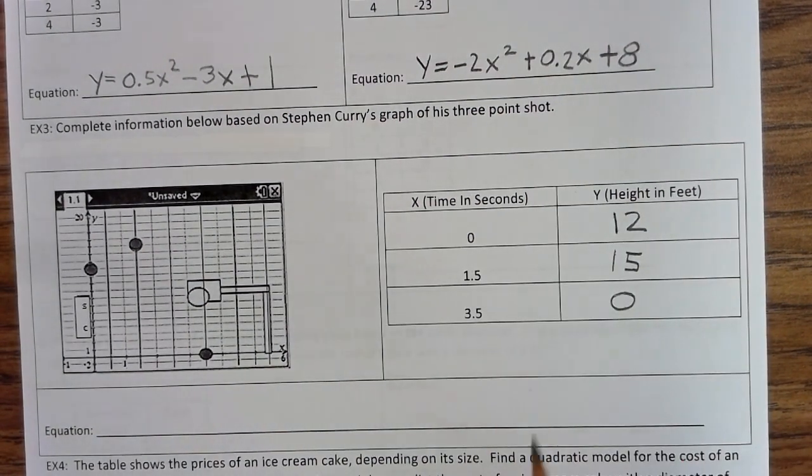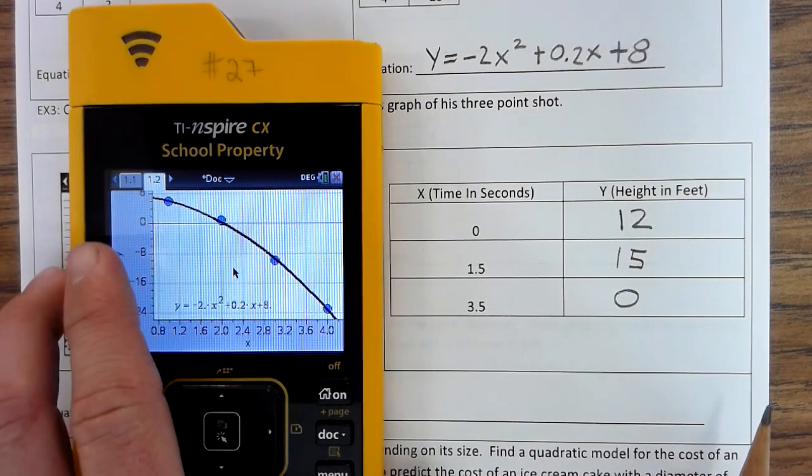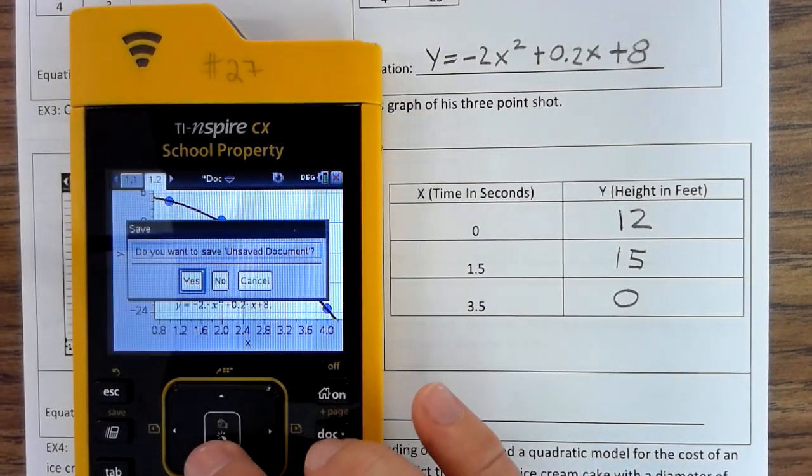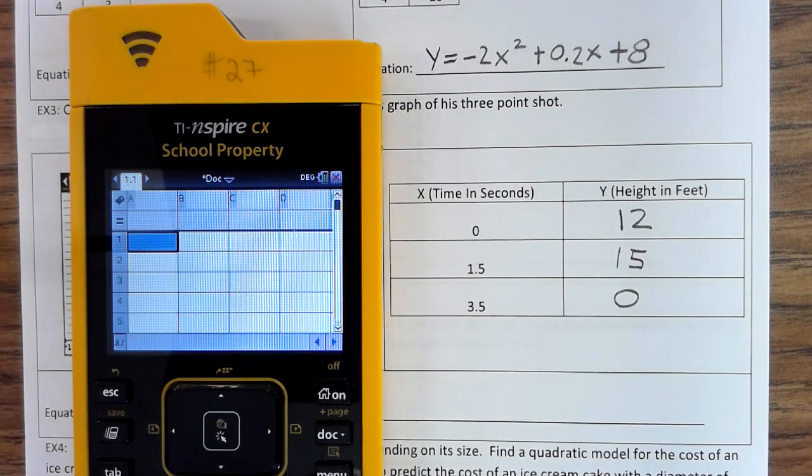Okay? So now, we have our table. We're going to use the calculator to find the regression equation. So we're going to go to on, new document, no, add list and spreadsheets.